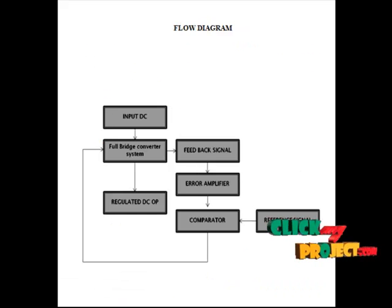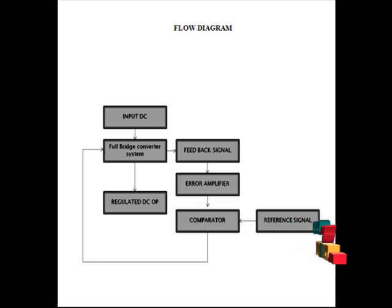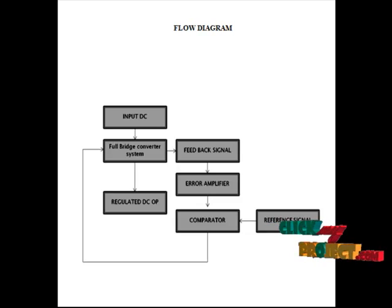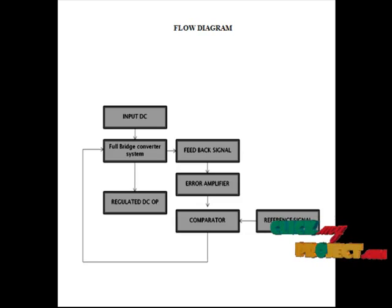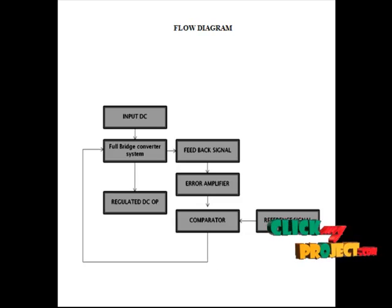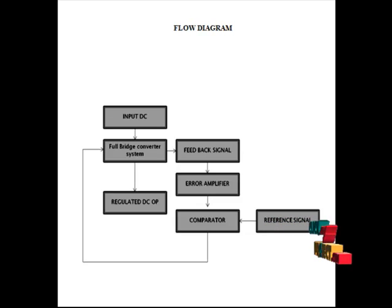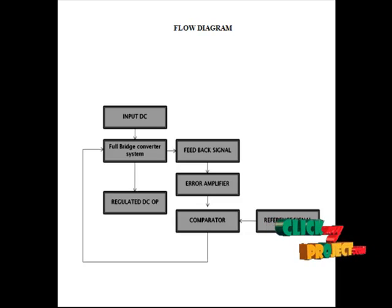Now I am going to explain the flow diagram of our project. To give the control signals to each and every switch in the CMOS full bridge converter circuit, we provide a feedback signal to our control circuit made using CMOS technology. The feedback signal is first fed to the error amplifier, which gives amplified signals from millivolt levels to certain voltage ranges. These voltages are given to a comparator stage, which compares the reference signals and the error signals and provides pulse generator outputs from the comparator output of our desired error signal.